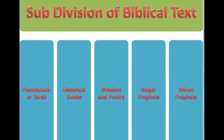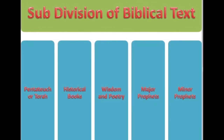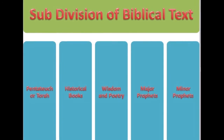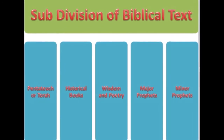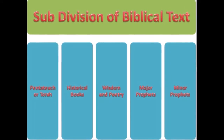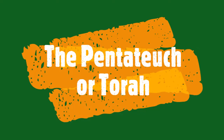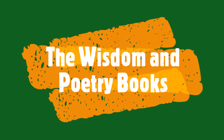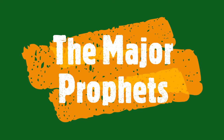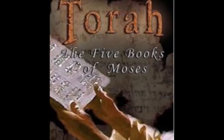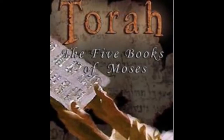The Old Testament can be subdivided into five broad segments, grouped according to theme, author, and historical context. These five categories are: 1. The Pentateuch or Torah; 2. The Historical Books; 3. The Wisdom and Poetry Books; 4. The Major Prophets; and 5. The Twelve Minor Prophets.